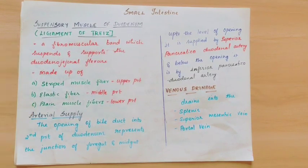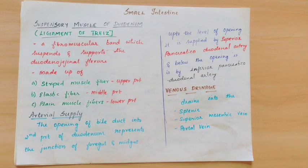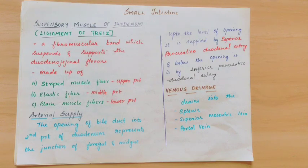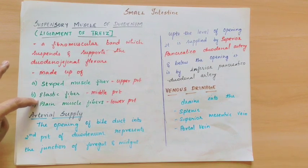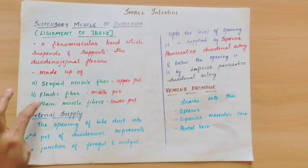The upper part is made of striped muscle fibers. The middle part is made of elastic fibers. And the last lower part is made by plain muscle fibers. So, this is all about the ligament of Treitz, otherwise known as suspensory muscle of duodenum — a fibromuscular band that helps maintain and support the duodenojejunal flexure. It is made of three types of fibers: striped muscle in the upper part, elastic muscle in the middle part, and plain muscle fibers in the lower part.